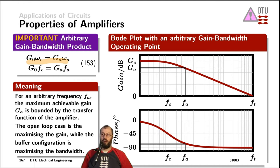We can arbitrarily choose a specific gain here, which then gives us the arbitrary frequency as the bandwidth of that amplifier. But the multiplication of the gain bandwidth product at the arbitrary operation point is always equal to the open loop operation of the amplifier times the corner frequency of the amplifier, also in open loop mode.